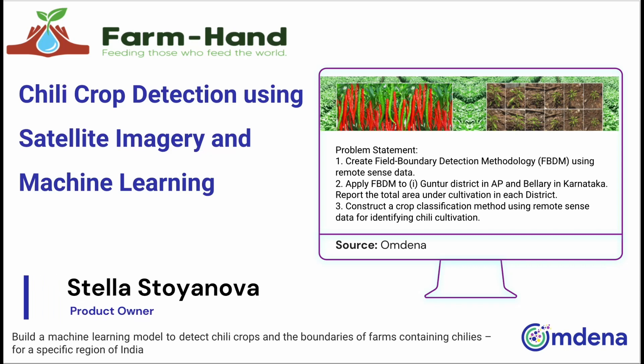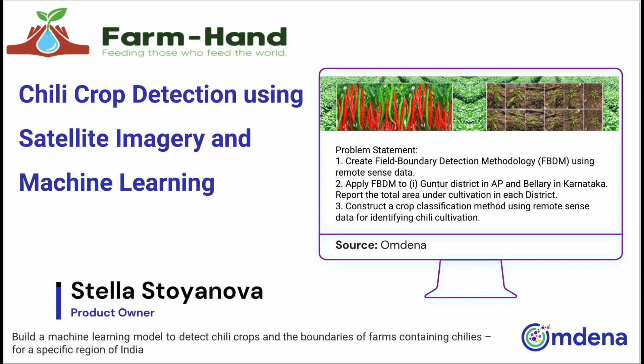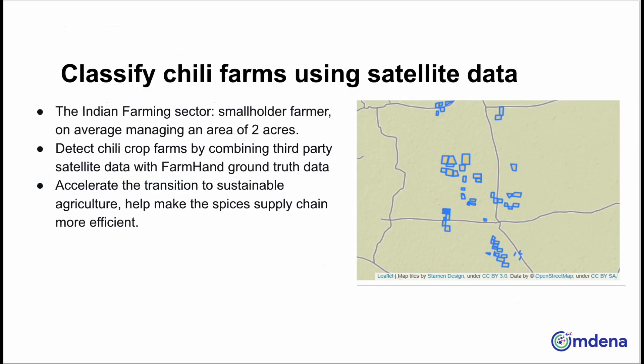A recent Omdina project with FarmHand, a software and data analytics company, worked to devise machine learning models that detect chili crops from satellite imagery. The goal was to produce a model that can detect farms in India and which of those farms grow chili. This can help FarmHand assist chili farmers in India with field-level insights to optimize fertilization and irrigation schedules, as well as streamline the supply chain.